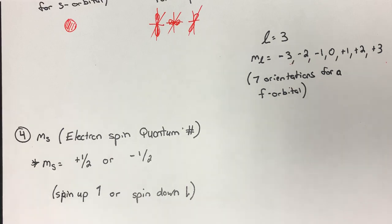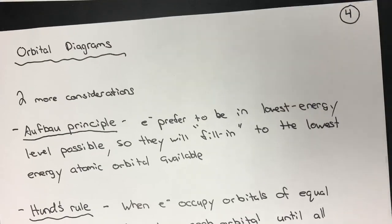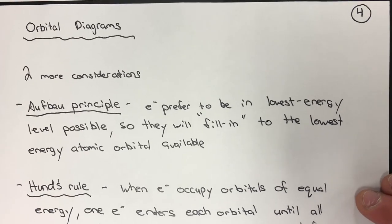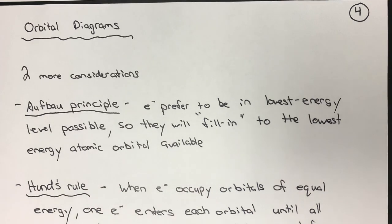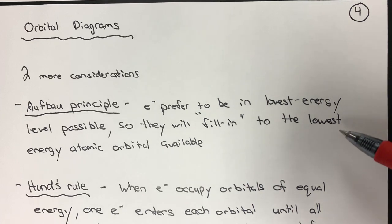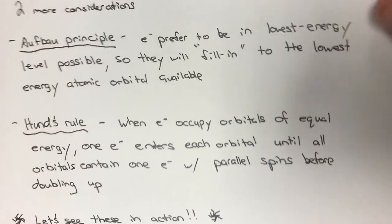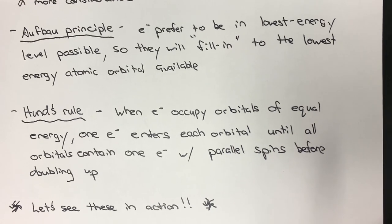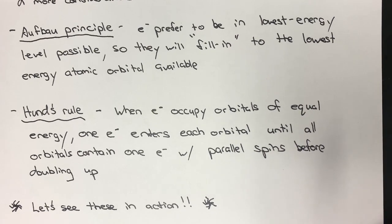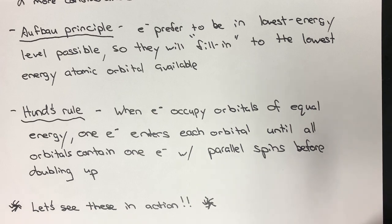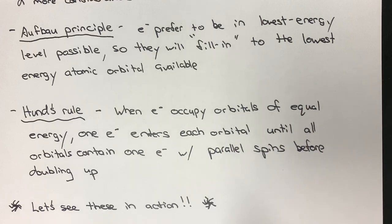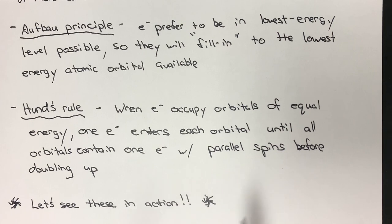We're going to shift focus and get into orbital diagrams, which should be relatively familiar. Before diving in, there are two considerations. First is the Aufbau principle — electrons prefer to be in the lowest energy state possible. Second is Hund's rule. When talking about a p type orbital, for example, there are three p type orbitals, and electrons will enter one at a time until each contains one electron with parallel spins before doubling up.